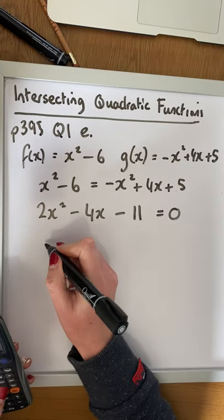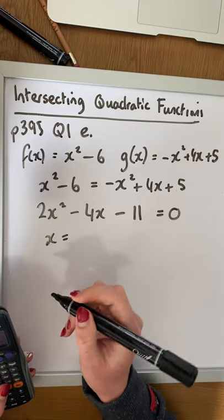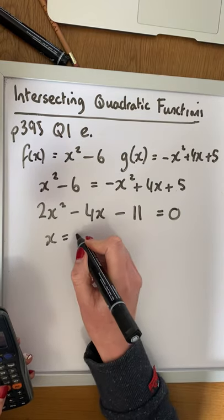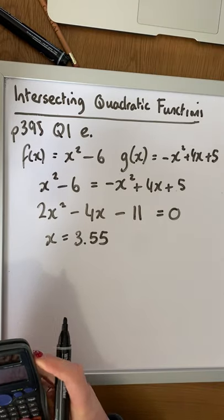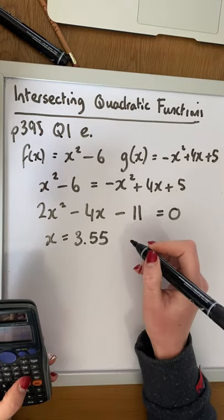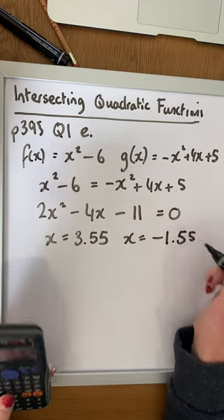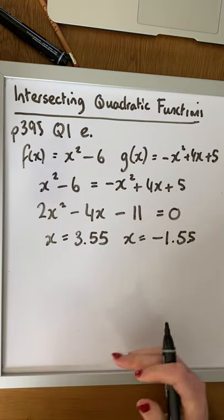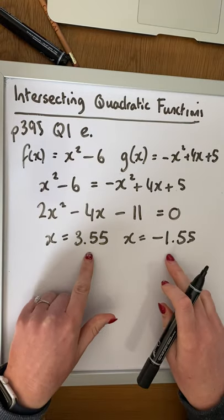So our two options are x is equal to, and I'm going to give it correct to maybe two decimal places, x is equal to 3.55. So the minus b formula is the correct option in this case, and x is equal to minus 1.55. Alright? So solving it algebraically is quick, it's efficient, and you get an exact answer.